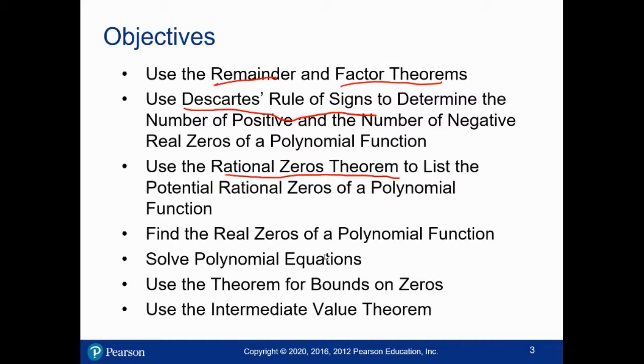The second, the rational zeros theorem, says here are some numbers that you might test out as roots. It gives you a nice finite length list of if there is a root that is a fraction, here are the possible ones it could be. So of all of the numbers that you might have tried to plug in, it narrows it down to a short collection. And between the two of those things, how many roots there might be and here's a collection of possible roots, you can get a lot of information.